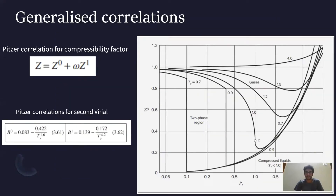By calculating Z, we are essentially determining the PVT behavior — that is, what the volume of a fluid will be at given conditions of temperature and pressure. This is important for practical applications: for example, when designing a pipeline or a tank, you need to know how pressure varies with volume and temperature so that you can properly design safety valves and other equipment features. For various sizing purposes, PVT behavior can be very helpful.